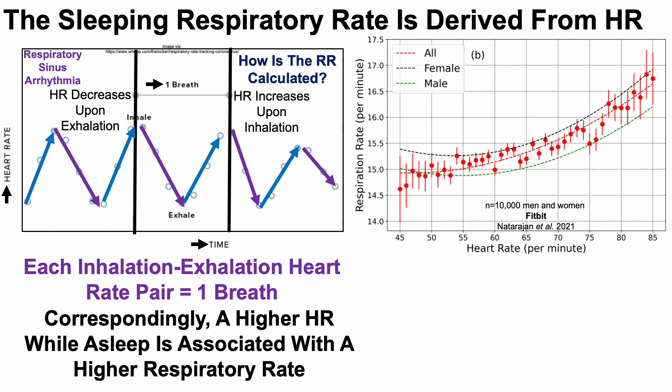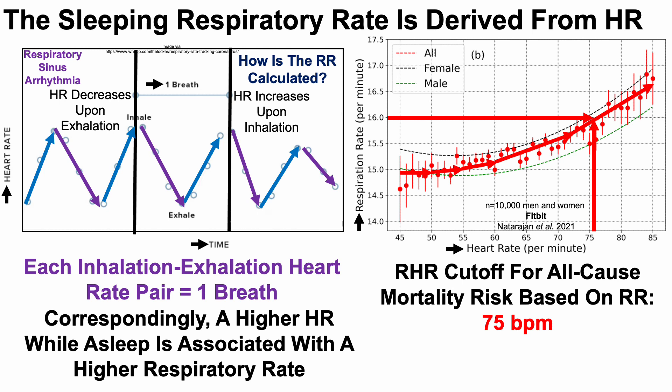This is a study of 10,000 men and women based on Fitbit data — at least one fitness tracker that can provide nighttime sleeping respiratory rate. On the y-axis we've got respiratory rate in breaths per minute, and on the x-axis, resting heart rate in beats per minute. As heart rate increases from 45 beats per minute up to 85, the respiratory rate correspondingly increases. Looking at the 16 breaths per minute cutoff from the all-cause mortality data, the corresponding resting heart rate cutoff is approximately 75 beats per minute — meaning people with a resting heart rate of 75 bpm may have a relatively high respiratory rate, putting them at increased all-cause mortality risk.